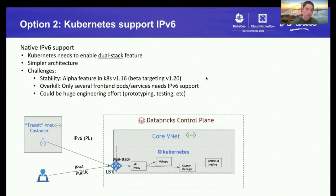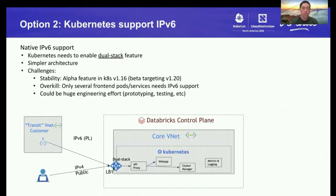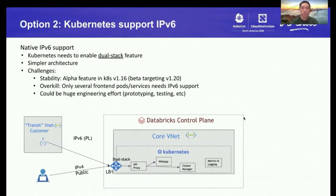The first concern is stability. On the version we're running, Kubernetes 1.16, the dual-stack feature is just an alpha feature — it was targeting beta in 1.20. It's not a good idea to enable an alpha feature in production workloads. Second, this option seems like overkill because we only need IPv6 support at the front end; maybe several pods will require it, but most of our Kubernetes workload will not. Finally, it could be a huge engineering effort to prototype and test everything with the dual-stack feature enabled.